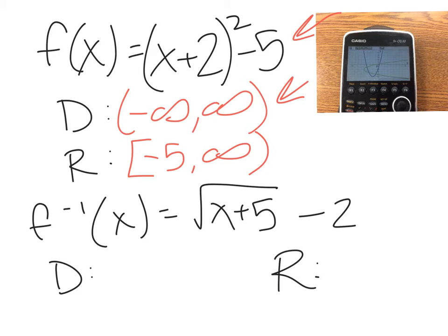So in our new inverse function, we want it to be a function. So we don't want all of the green up here. We just want the top, the positive part right there. So the domain of that is from negative 5 to infinity. And then its range, it goes as low as negative 2, and then it goes off to positive infinity, the part that I highlighted here.